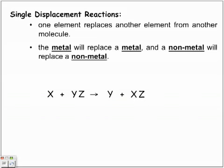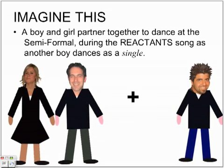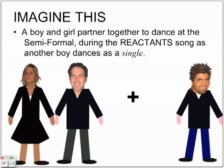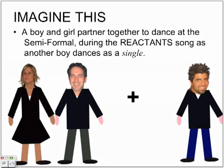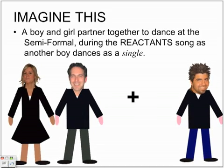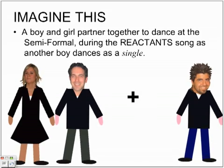Let's look at this in a way that's a little easier to understand. Imagine a boy and girl partner together to dance at the semi-formal. During the reactant song that's playing, another boy dances as a single. So here we have our couple dancing, and here's our lonely single individual dancing.